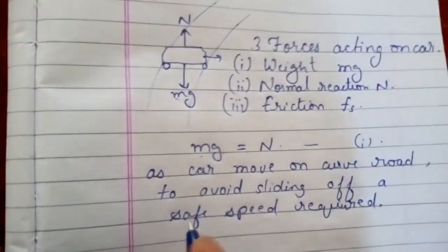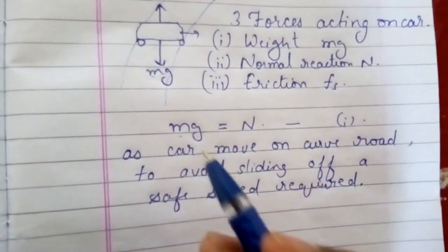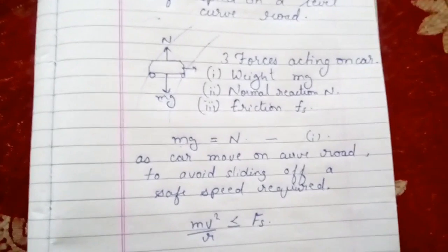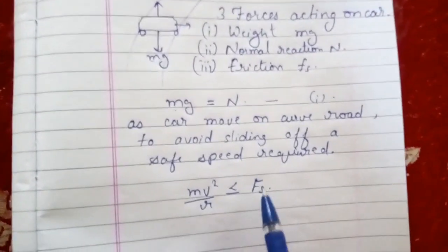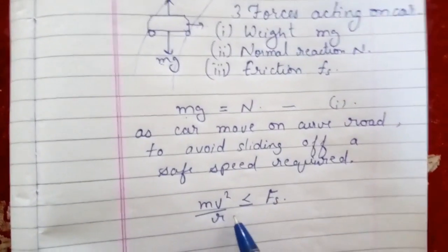In order to get safe speed, the centripetal force must be less than the frictional force. The force of friction must be greater than the centripetal force, otherwise the car will slide.